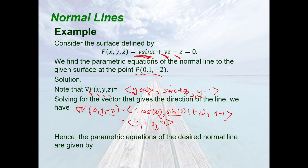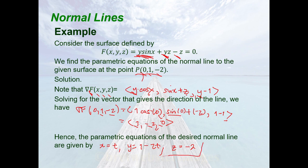Hence, the parametric equations of the desired normal line are: x = x₀ + at, with x₀ = 0 and a = 1, so x = t; y = y₀ + bt, with y₀ = 1 and b = −2, so y = 1 − 2t; z = z₀ + ct, with z₀ = −2 and c = 0, so z = −2. Therefore, the parametric equations of the normal line are x = t, y = 1 − 2t, z = −2, where t ∈ ℝ.